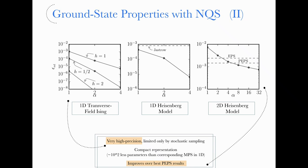An important feature worth mentioning is that this representation, since it is highly nonlinear — a nonlinear decomposition of the wave function coefficients — contrasts with the linear decomposition done in tensor networks. Because it is nonlinear, in principle it can be more compact. On those 1D Heisenberg problems, to reach the same accuracy we need roughly 100 times fewer parameters than the corresponding matrix product states, suggesting these networks are more compact representations of those states.